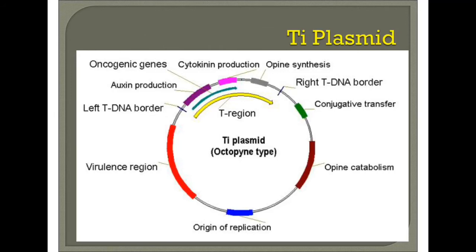The T-DNA consists of three genes: oncogenes in the form of auxin production and cytokinin synthesis, and opine synthesis. It consists of right and left borders. VIR genes are responsible for nicking the DNA and transporting it into the plant cell. Additional genes include opine synthesis, opine catabolism, and origin for replication. This is the wild-type Ti plasmid.